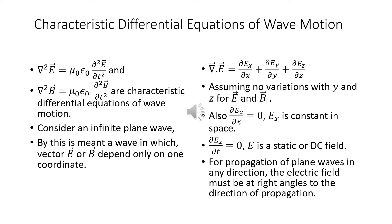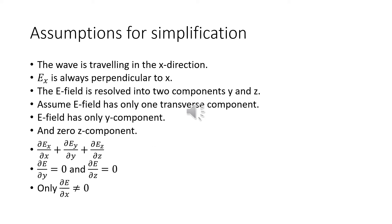For propagation of plane waves in any direction, the electric field must be at right angles to the direction of propagation. We now have some assumptions for simplification: we assume that the wave is traveling in the positive x direction, E is always perpendicular to x, and the E field is resolved into two components, y and z.